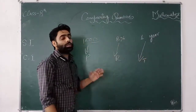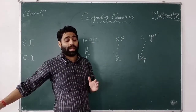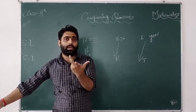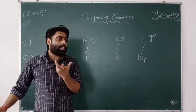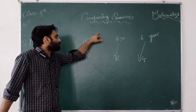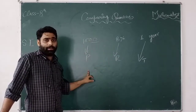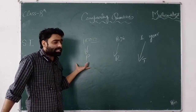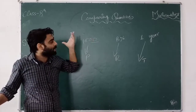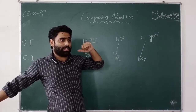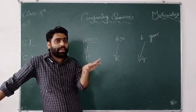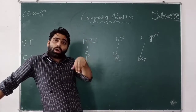Now the bank uses the concept of simple interest. We have the principle, and we calculate simple interest on that principle. The difference between simple interest and compound interest is in how the amount grows.